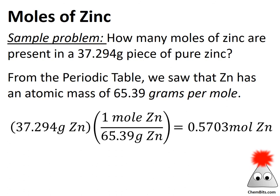Let's jump in and take a look at a problem: How many moles of zinc are present in a 37.294 gram piece of pure zinc? The atomic mass of zinc is 65.39 grams per mole, so we set it up as 37.294 grams of zinc times moles per gram — or divided by grams per mole — which gives us 0.5703 moles of zinc.